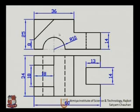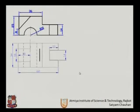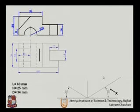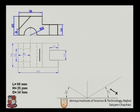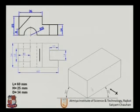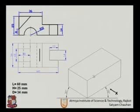One more problem: we have overall dimensions and let us draw the isometric of this geometry. First, we draw the axes. The length is 60 mm, the overall height is 25 mm, and the depth is 34 mm. We have produced a solid geometry with these overall dimensions: 60 mm, 25 mm, and 34 mm.